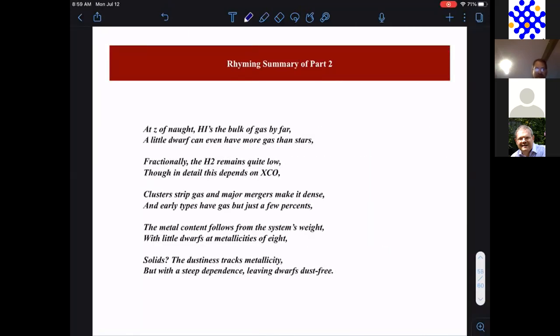At z of naught, H1 is the bulk of gas by far. A little dwarf can even have more gas than stars. Fractionally, the H2 remains quite low, though in detail this depends on XCO.